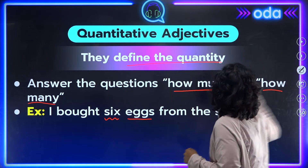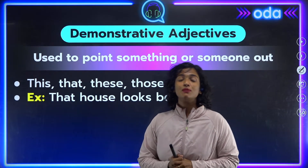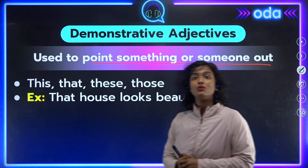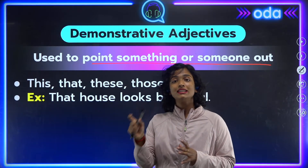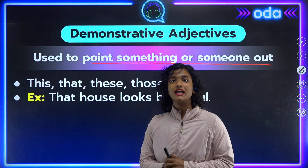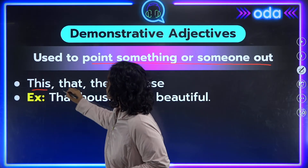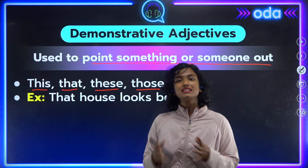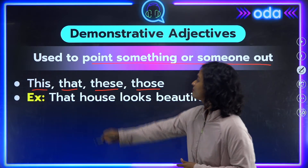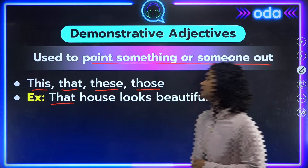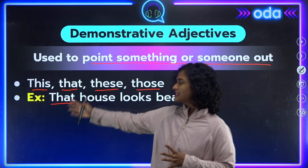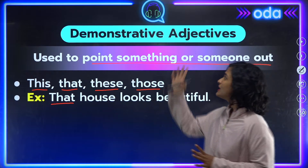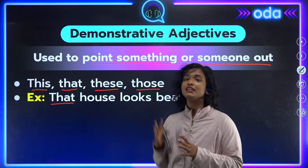Our third type is demonstrative adjectives, used to point something or someone out — to talk about one particular thing or person. Examples of demonstrative adjectives include: 'this,' 'that,' 'these,' and 'those.' For example, 'That house looks beautiful' — the word 'that' helps us identify which specific house we are talking about.